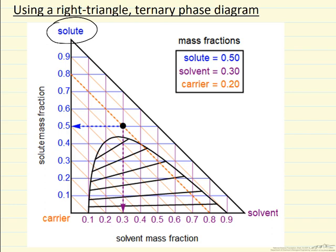Similarly for solvent, in purple on the x-axis, the black dot corresponds to the value of 0.3.